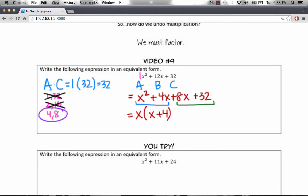Now, let's focus on the right two terms. What do 8x and 32 have in common? Well, they're both divisible by 8. Now, if we factor out an 8, we're left with x plus 4.